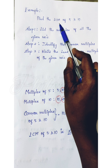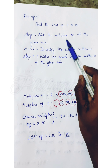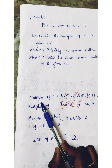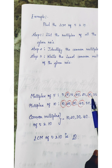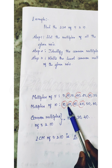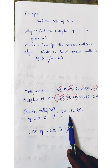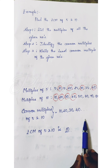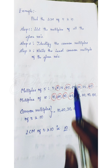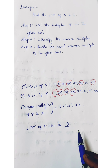To summarize: step one is to list the multiples of all the given numbers — here 5 and 10 separately. Step two is to identify the common multiples — the common multiples of 5 and 10 are 10, 20, 30, 40, and so on. Step three is to write the least common multiple — the least is 10. Therefore, the LCM of 5 and 10 is 10.